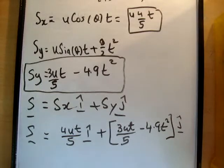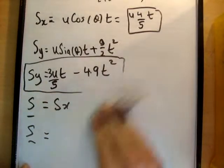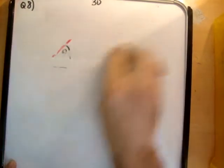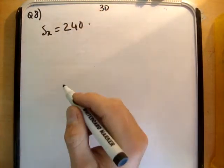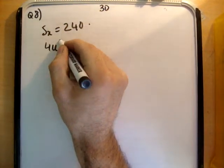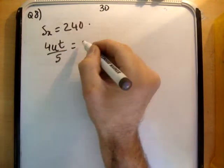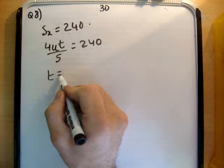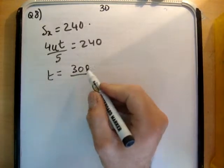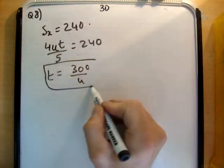So now all we need to do is plug in our constraints. So I'm just going to clear this up here. So the constraint was that when s sub x was equal to 240. So we had 4u t over 5 is equal to 240. Therefore, t is equal to 300 over u.